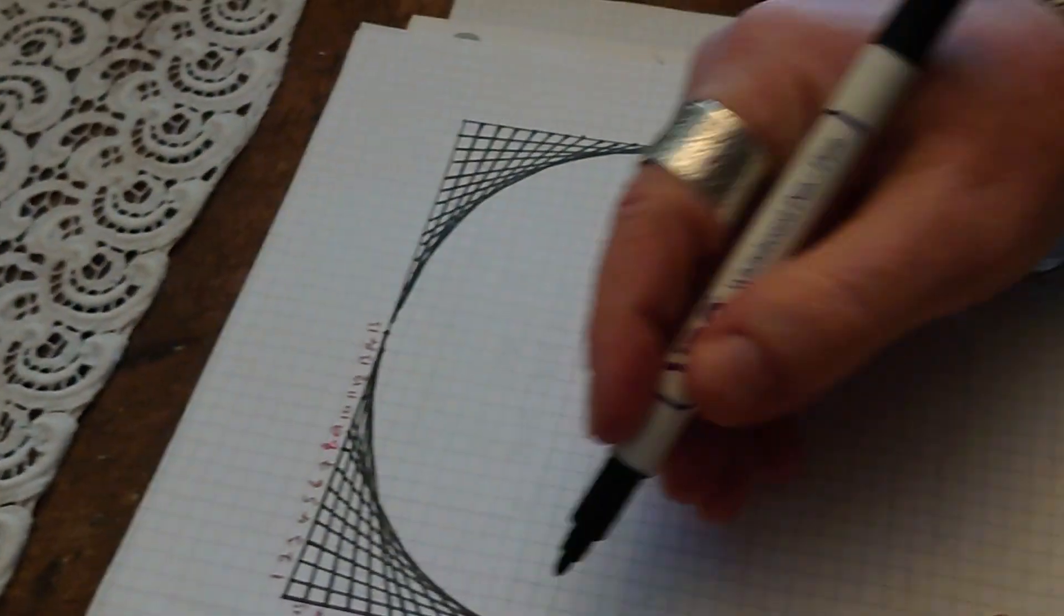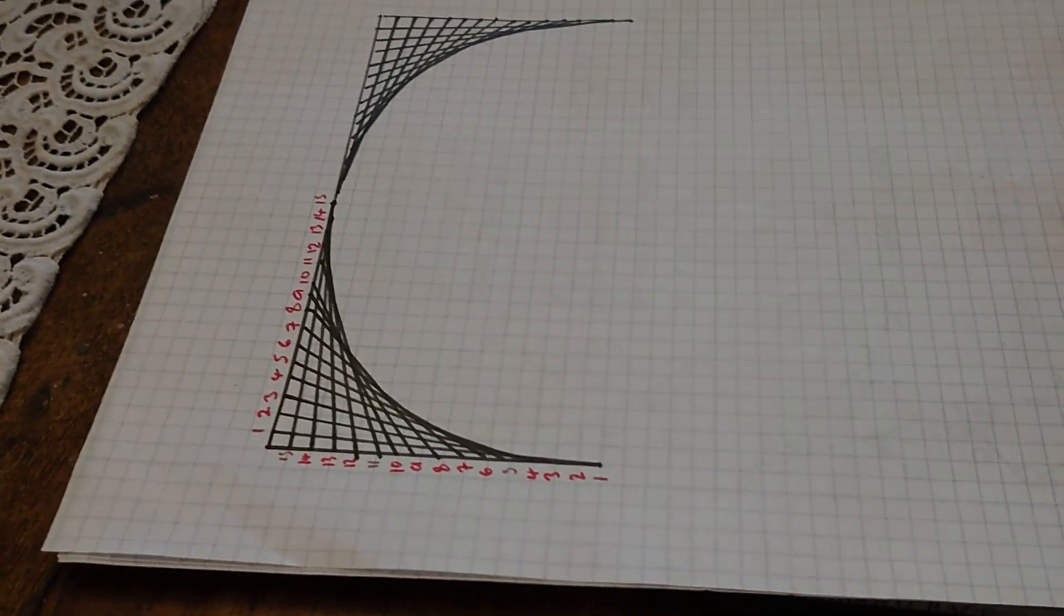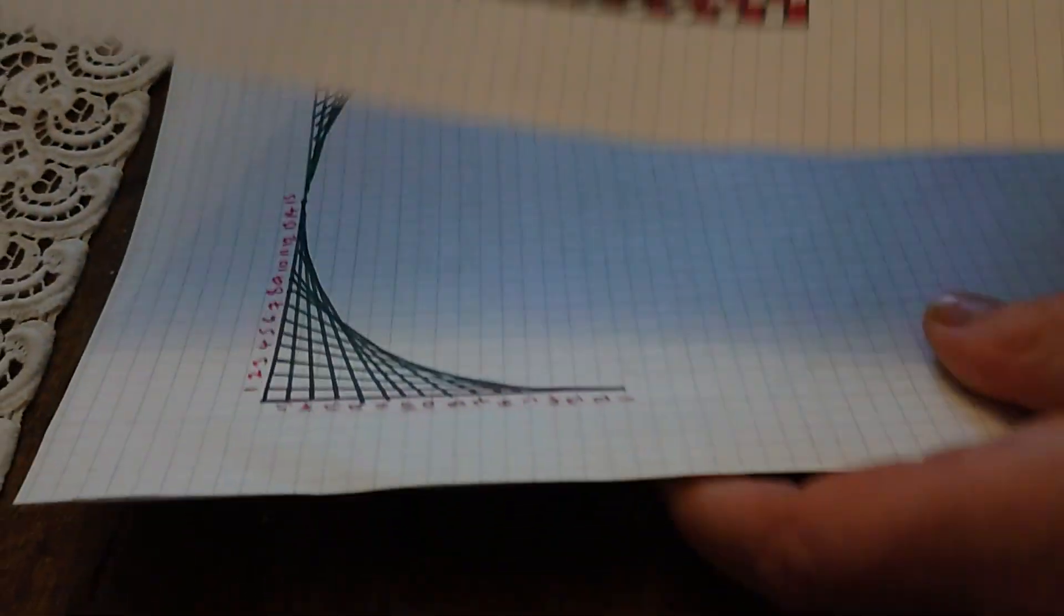And as you can see, that forms an arc, half of a circle. And in the best traditions of Blue Peter, here's one I prepared earlier.